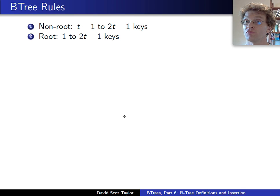The root node will have from one to two T minus one keys. You'll notice if we have a value of T equals two, then both the root and the non-roots will have one to three keys per node, just like a two-three-four tree.